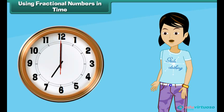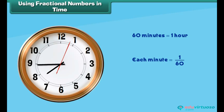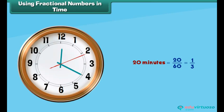Can we divide time into fractions? Yes. Look at this clock. The hours would be the whole numbers and the minutes would be the fractions. Since there are 60 minutes in an hour, each minute is 1/60. You can say 20 minutes would be equal to 20 divided by 60, and it will be equal to one third.